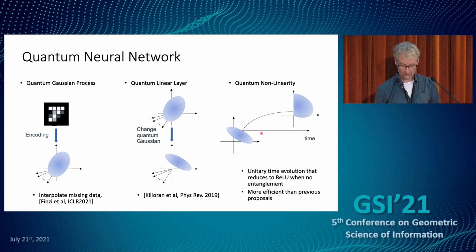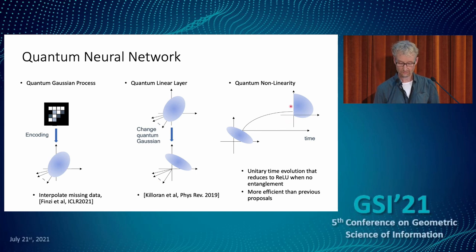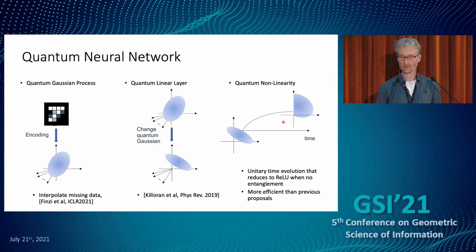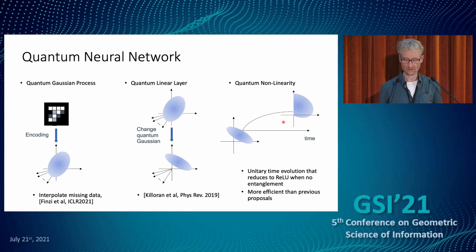For the neural network we also need non-linearities. We defined a new non-linearity that looks a lot like a ReLU, which turns a Gaussian state into a non-Gaussian state — representable as a Wigner function that can be negative in places. This is a much more general object and harder to work with. When you go fully quantum, you can no longer simulate this on a classical computer — you need a quantum computer, which doesn't yet exist, but you can write down the math.